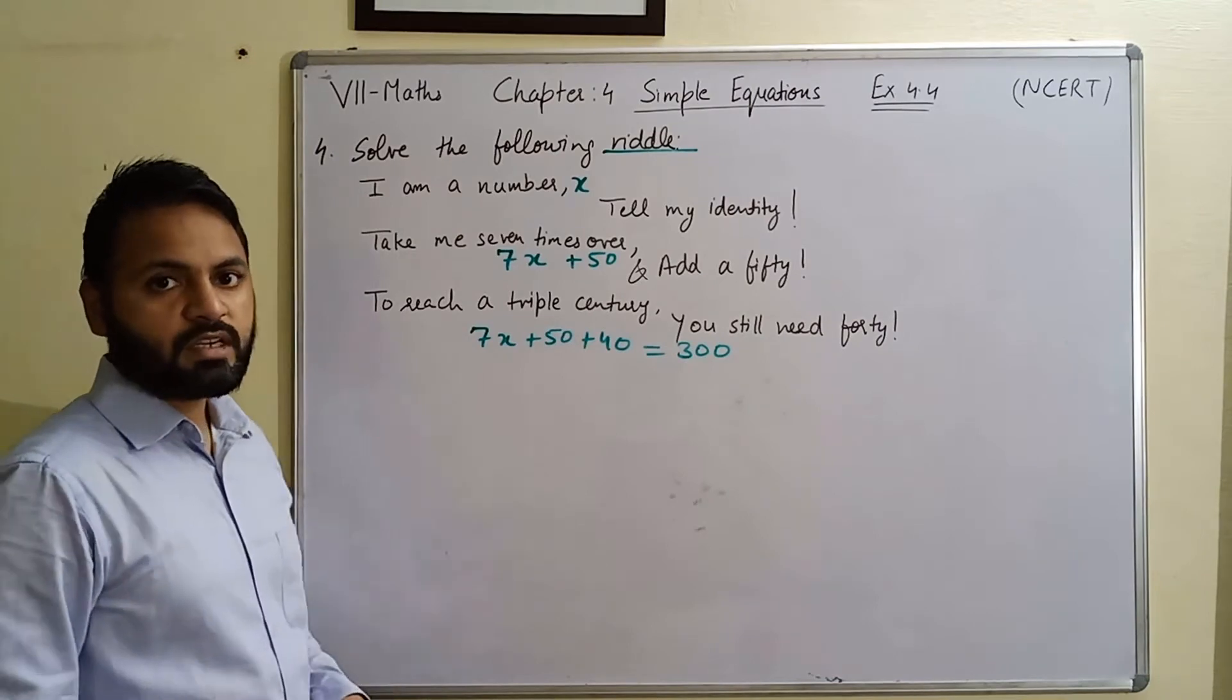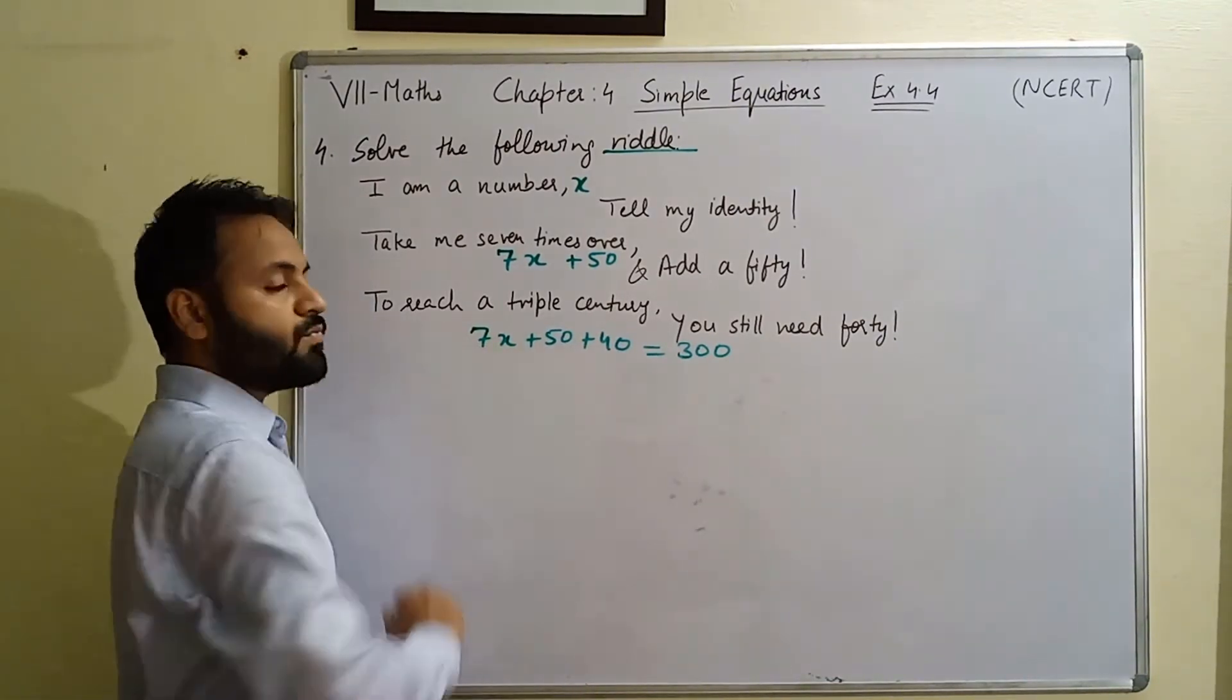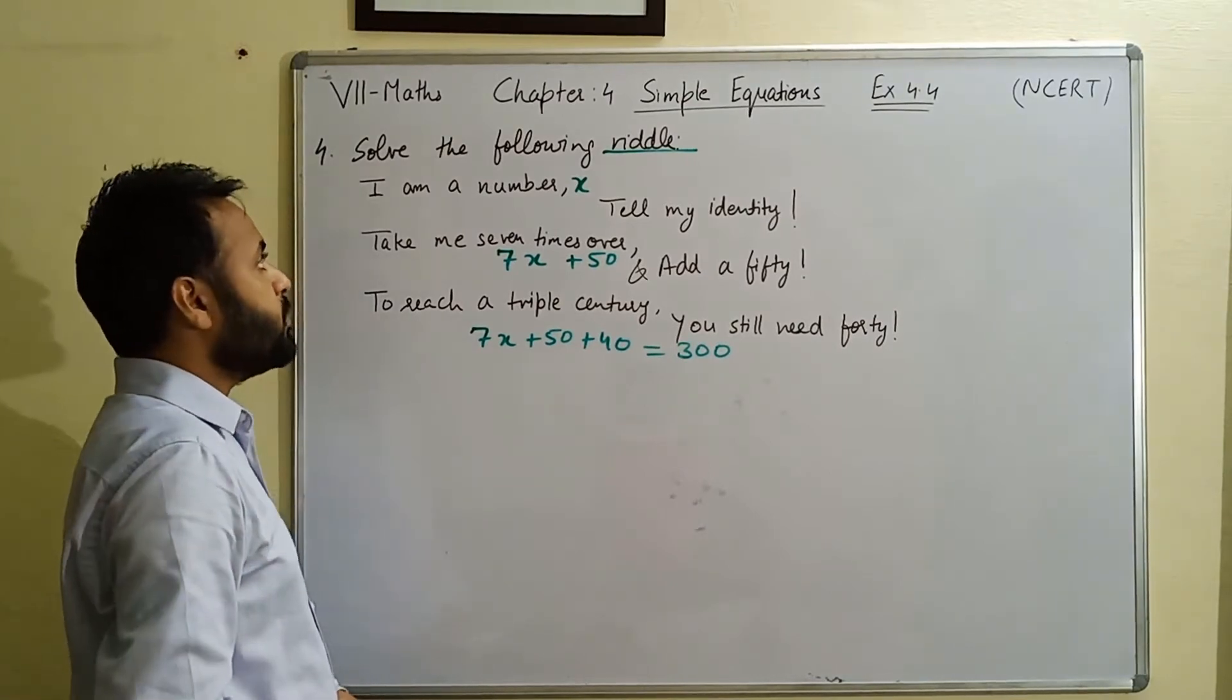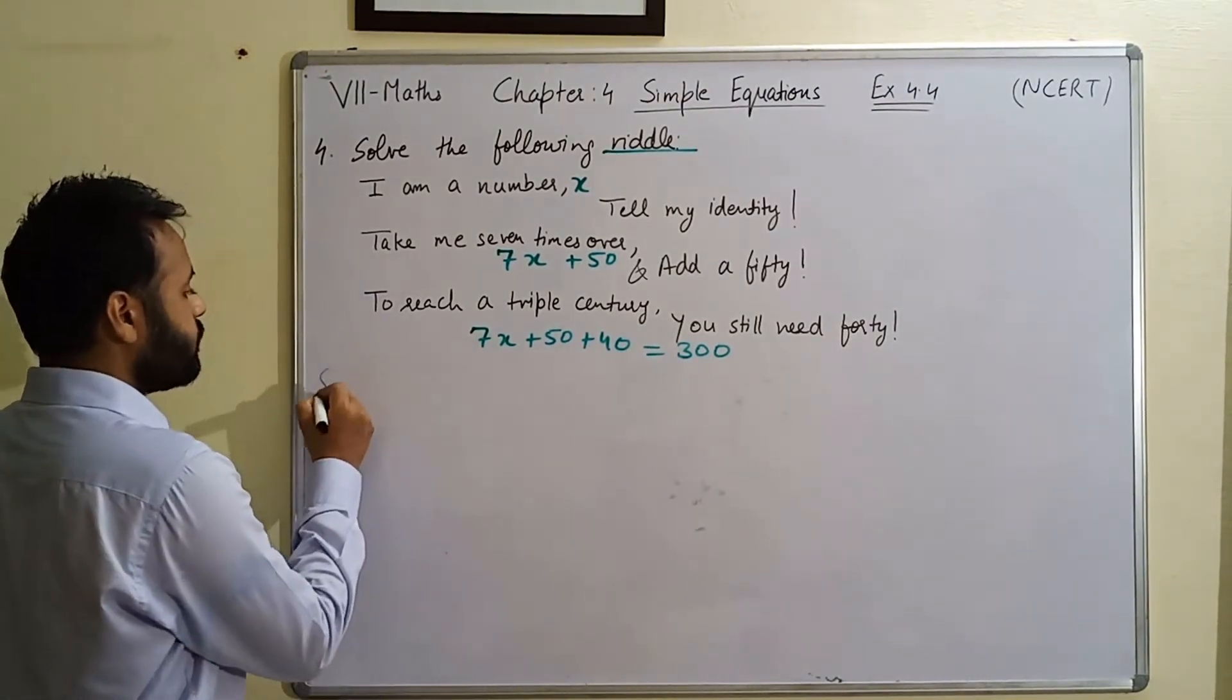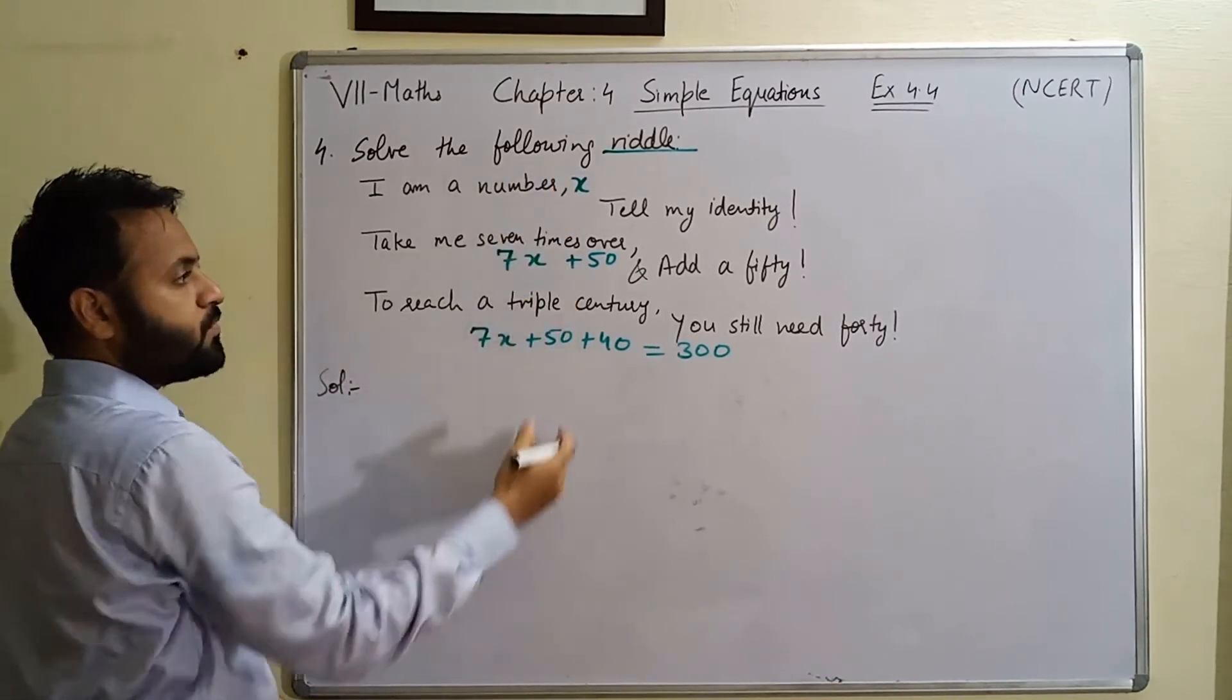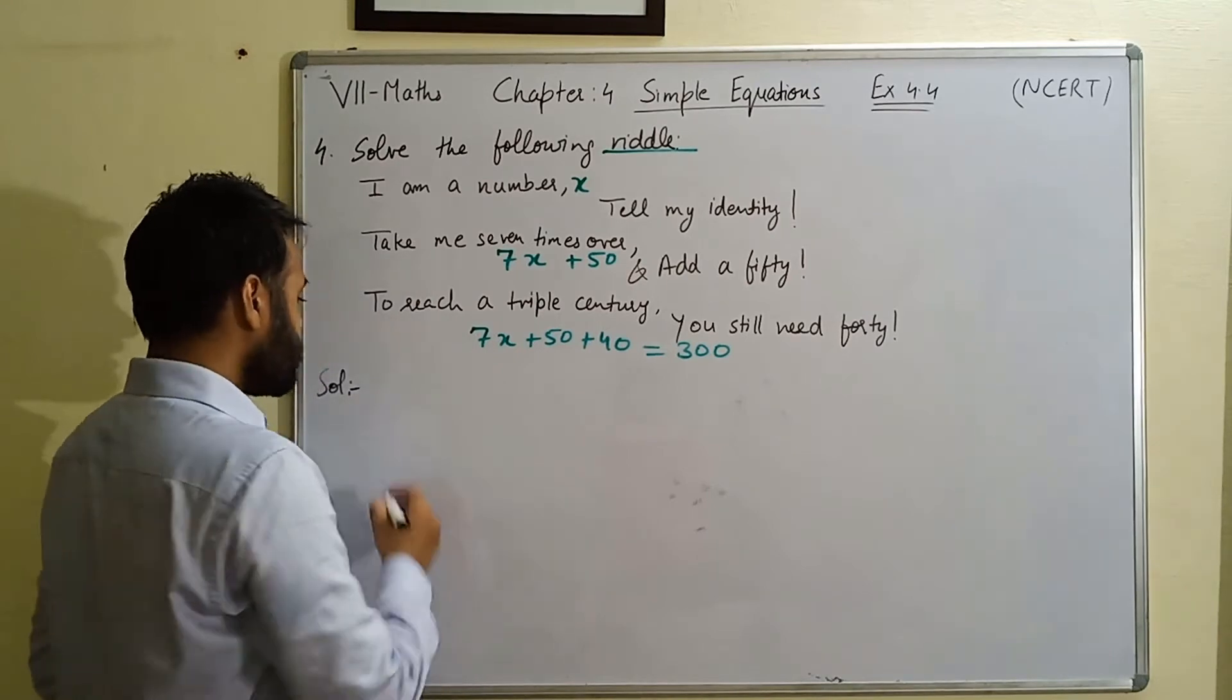So if we add 7x plus 50 and 40 more if we add, we will get a triple century. So this is all rough calculation that I have written here. Lekin hum se statement form mein kaise karenge.